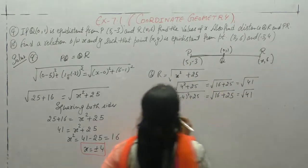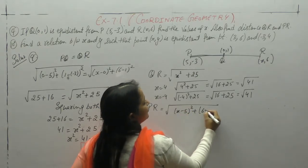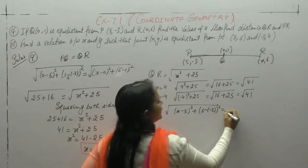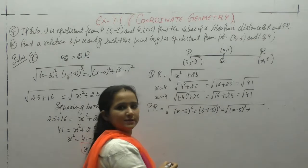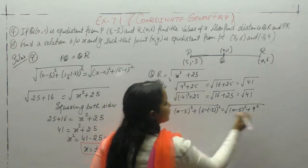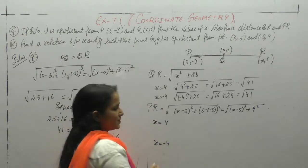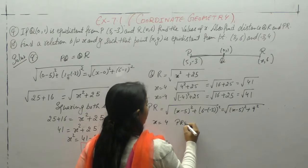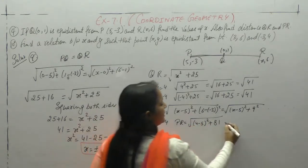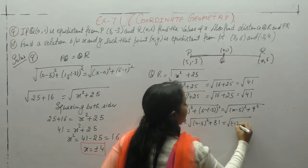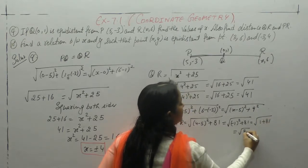Now we need to find distance PR. Square root of (x2 minus x1) whole square plus (y2 minus y1) whole square. x minus 5, minus minus plus 6 plus 3, 9 square. This also has two values, when x is 4 and when x is minus 4. So PR: (4 minus 5) whole square plus 9 square is 81. Minus 1 square plus 81. So 1 plus 81, square root of 82.